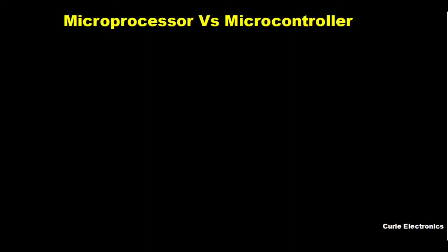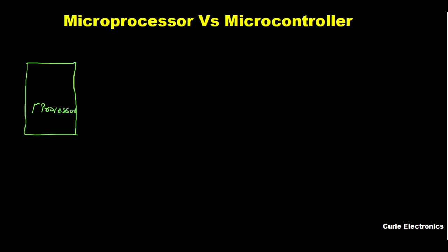So how do a microcontroller and microprocessor differ? Let's look at a block diagram of a microprocessor-based system. The microprocessor has a CPU for processing, and it won't be having any other peripherals.